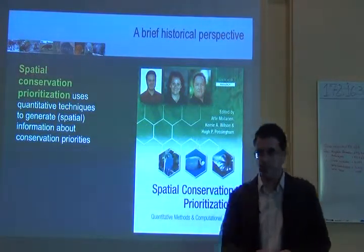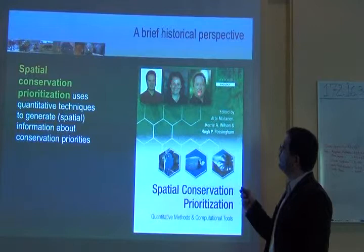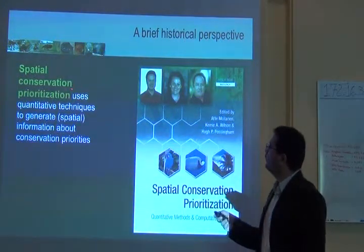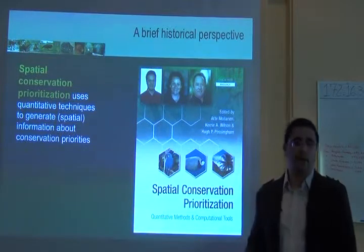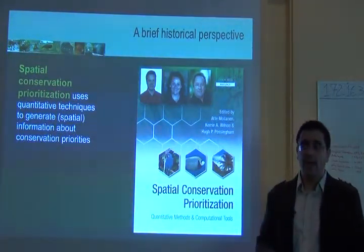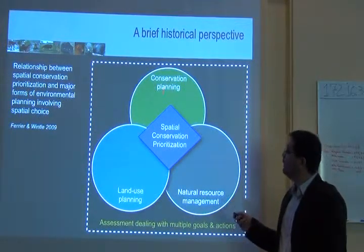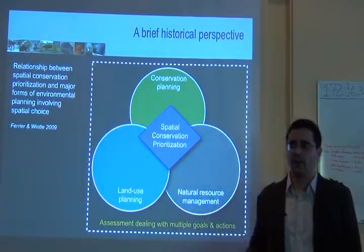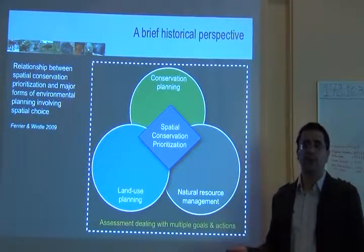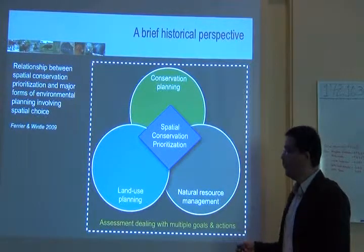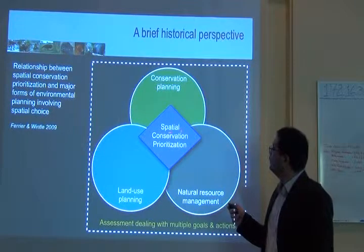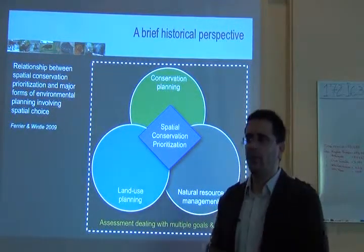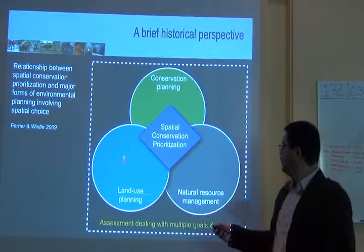In 2009, scientists Ate Moellani, Kerry Wilson, and Hugh Possingham published a book called Spatial Conservation Prioritization. Spatial conservation prioritization uses quantitative techniques to generate information about conservation priorities. It relates to conservation planning, but also to other types of assessments dealing with multiple goals and actions, including land use planning and natural resource management.